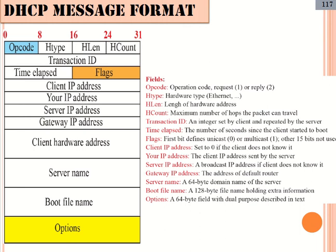When the tag field is 53, the value field defines one of eight DHCP message types: value 1 is DHCP Discover, value 2 is DHCP Offer, value 3 is DHCP Request, value 4 is DHCP Decline, value 5 is DHCP Acknowledge, value 8 is DHCP Release, and the final type is DHCP Inform. Using these eight message types, we will see how data is communicated between the server and the client.